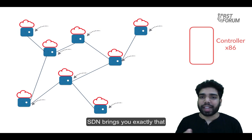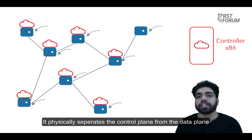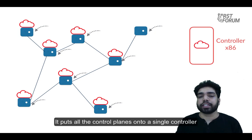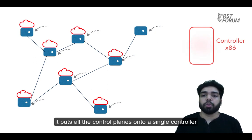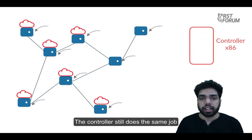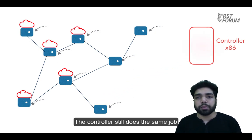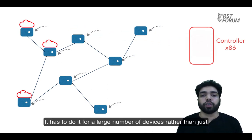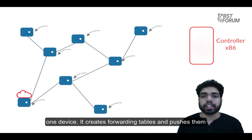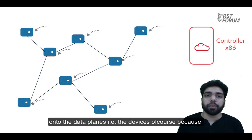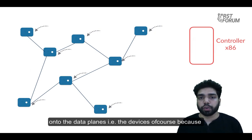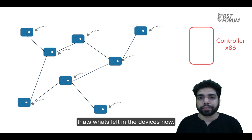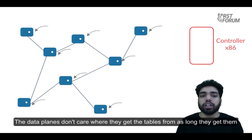SDN brings you exactly that. It physically separates the control plane from the data plane of the device. It puts all the control planes onto a single controller. The controller still does the same job as that of an individual control plane — only now it has to do it for a large number of devices rather than just one. It creates forwarding tables and pushes them onto the data planes, that is, the devices, because that's what is left in the devices now. The data planes don't care where they get the tables from, as long as they get them.